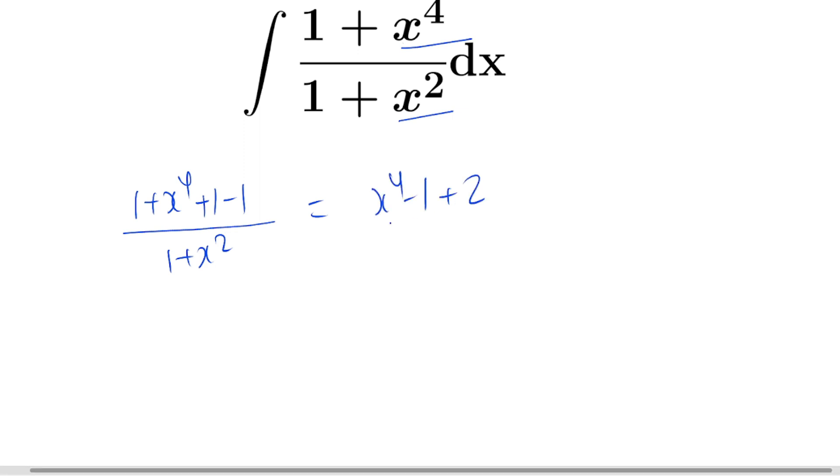So we have x to the power 4 minus 1 plus 2 over 1 plus x square. Now we can factorize x to the power 4 as x square minus 1 into x square plus 1, plus 2 over 1 plus x square.